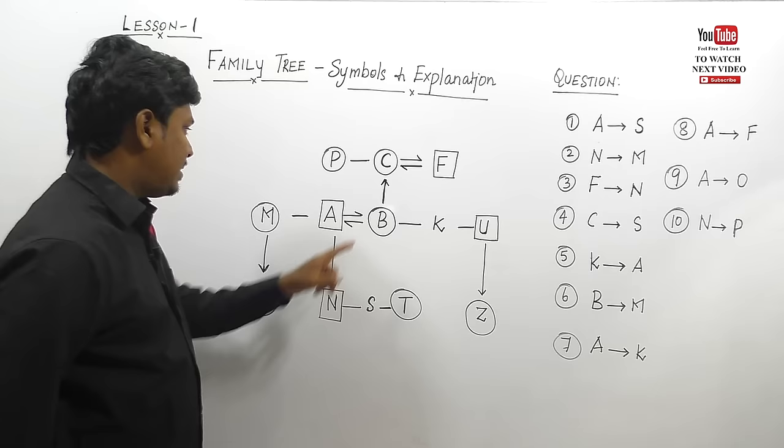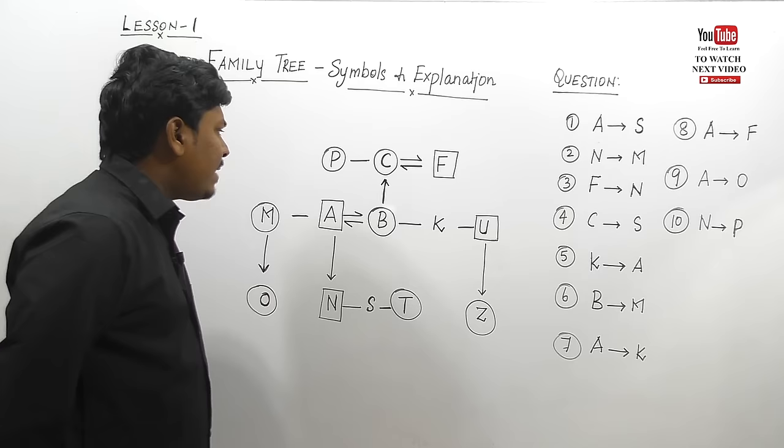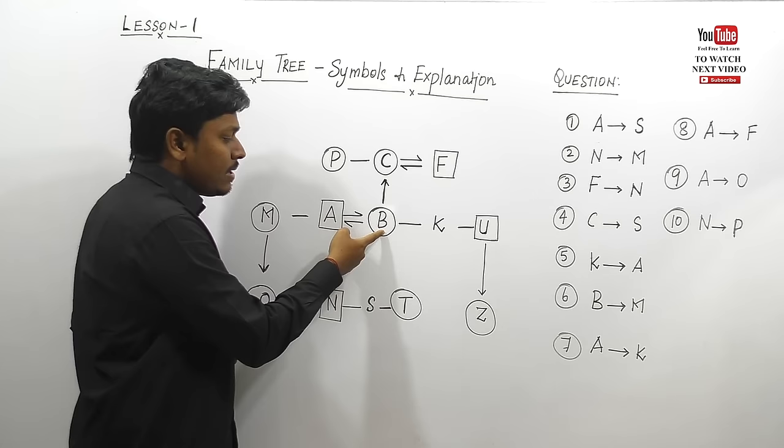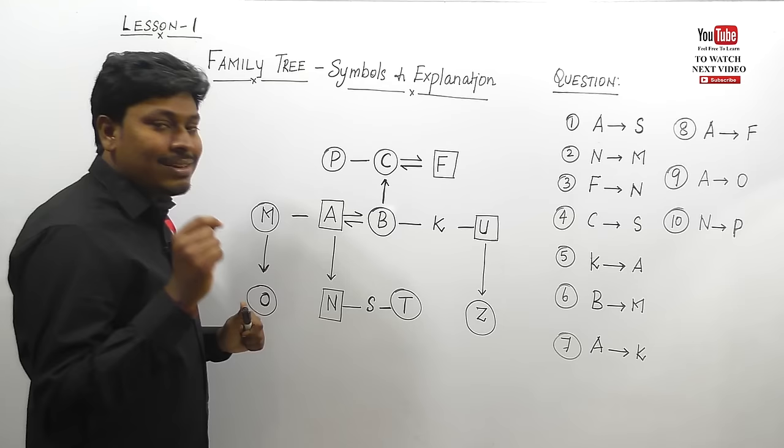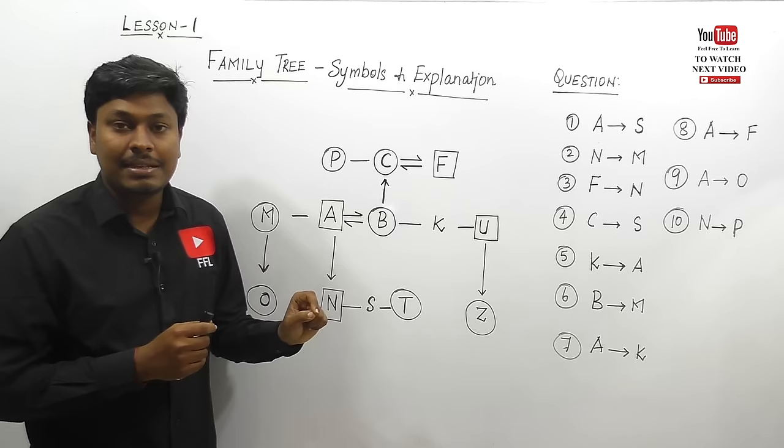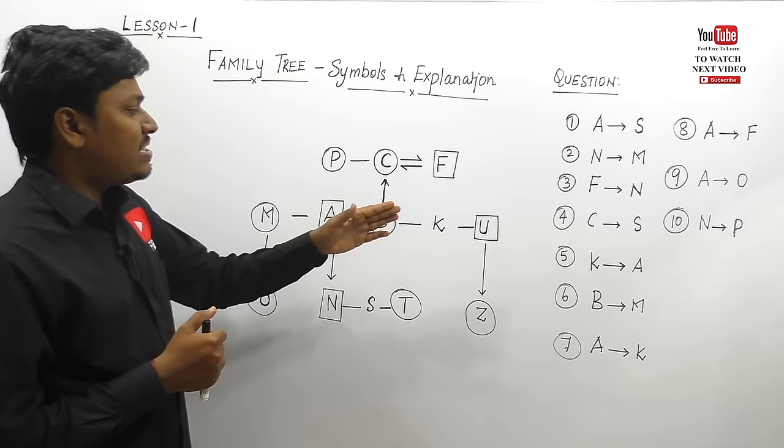Question 4: C to S — from C, what is the relation of S? C is B's mother, so C is having a daughter B. But B's child S — we don't know the gender of S. So the answer is either grandson or granddaughter: grandson if male, granddaughter if female.